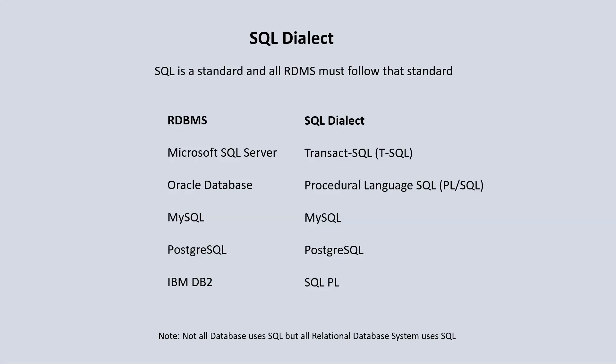Or for instance, you have elevators in North America, but the same thing is referred to as a lift in British English. Similarly, the proprietary name for SQL used by Microsoft SQL Server is called Transact-SQL, or simply T-SQL. For Oracle Database, you have PL/SQL. For MySQL, it's simply called MySQL. For PostgreSQL, it's PostgreSQL, and IBM DB2 uses SQL PL.